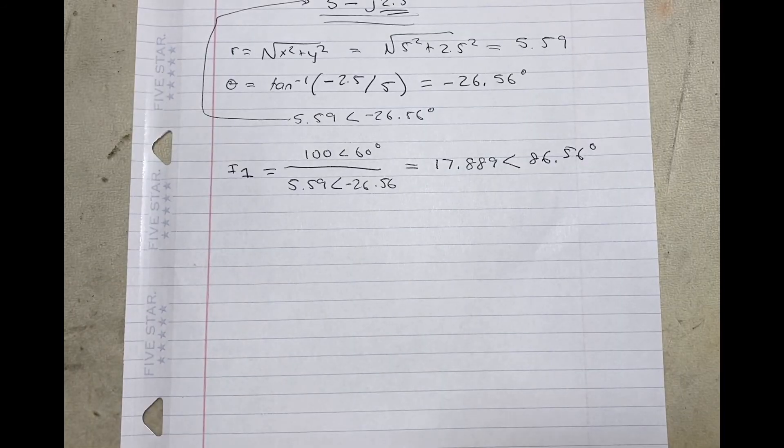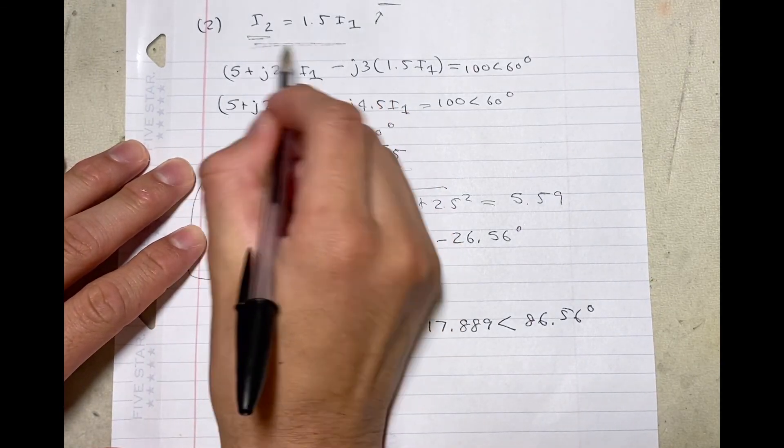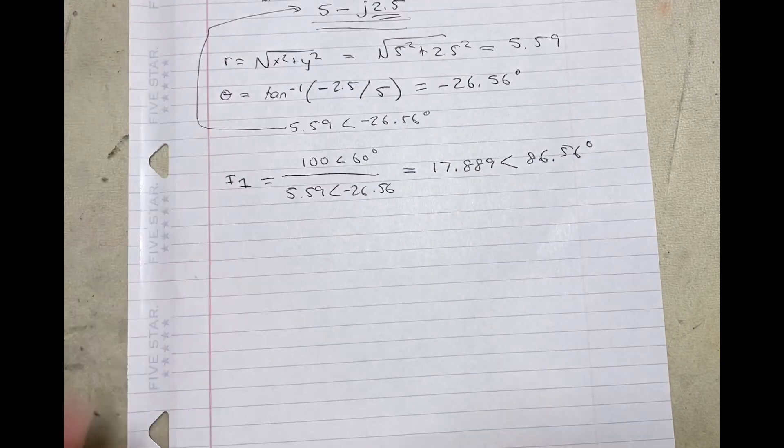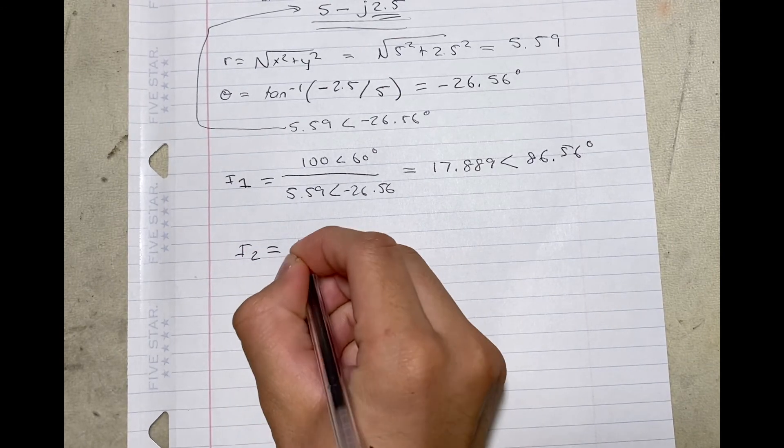We now have I1, and if we recall from above, we found that I2 is equal to 1.5 I1. So with I1, we can solve for I2.